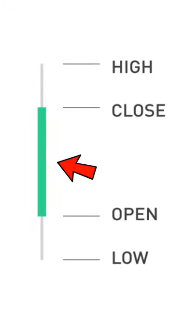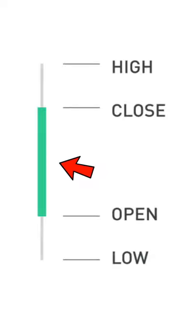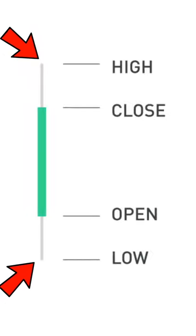The body or thick part represents the difference in open and close prices. The wicks or thin lines represent the highest and lowest prices in a given time period.